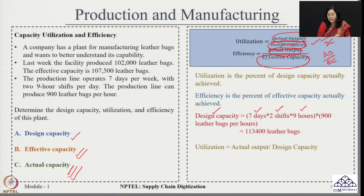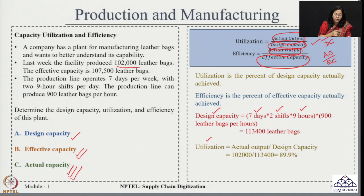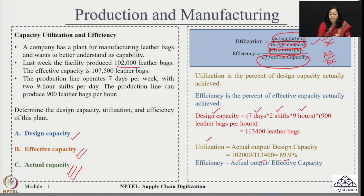Using this design capacity, let us calculate our utilization. Referring to the formula — actual output divided by design capacity — the actual output is around 1,02,000, divided by the design capacity of 1,13,400. This gives utilization as 89.9 percent. Going forward, let us calculate the efficiency, which is the ratio of actual output versus effective capacity. Putting the actual output of 1,02,000 leather bags and the effective capacity of 1,07,500 into the formula, the efficiency for the given process is coming around 94.5 percent.